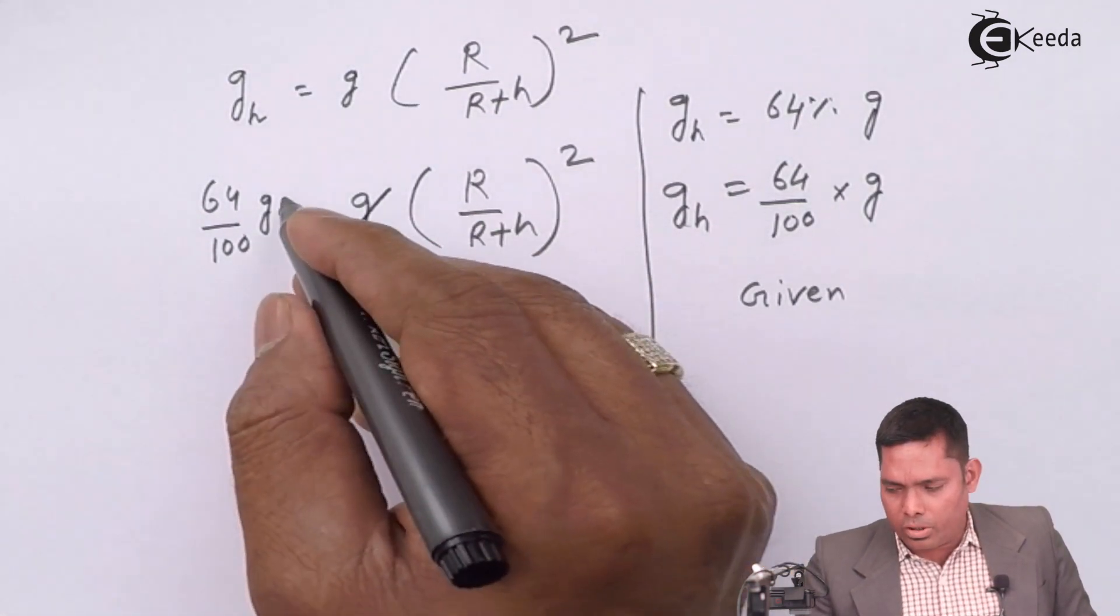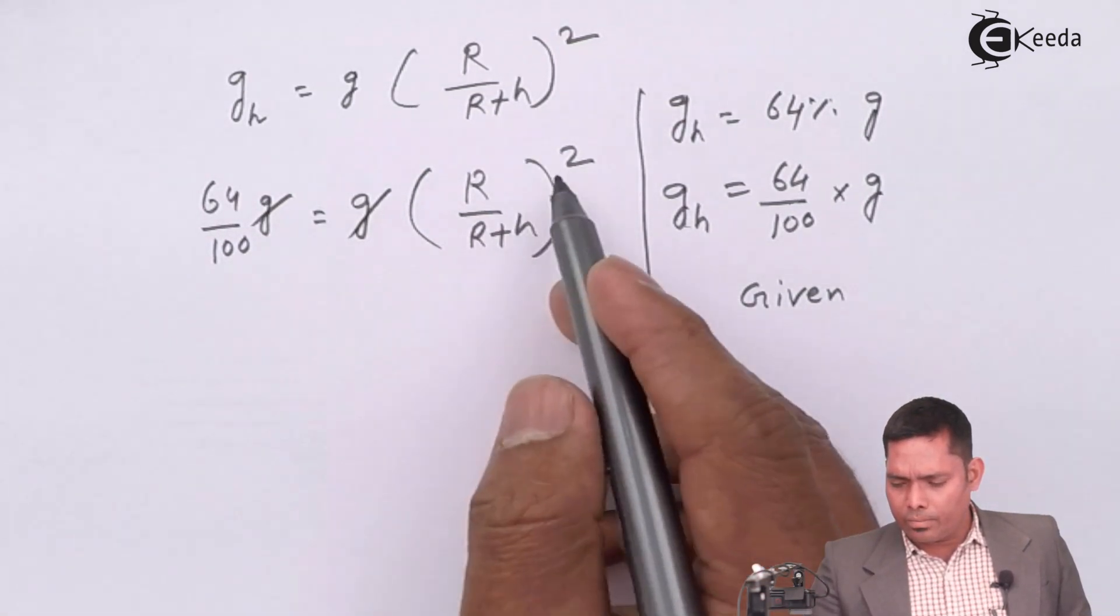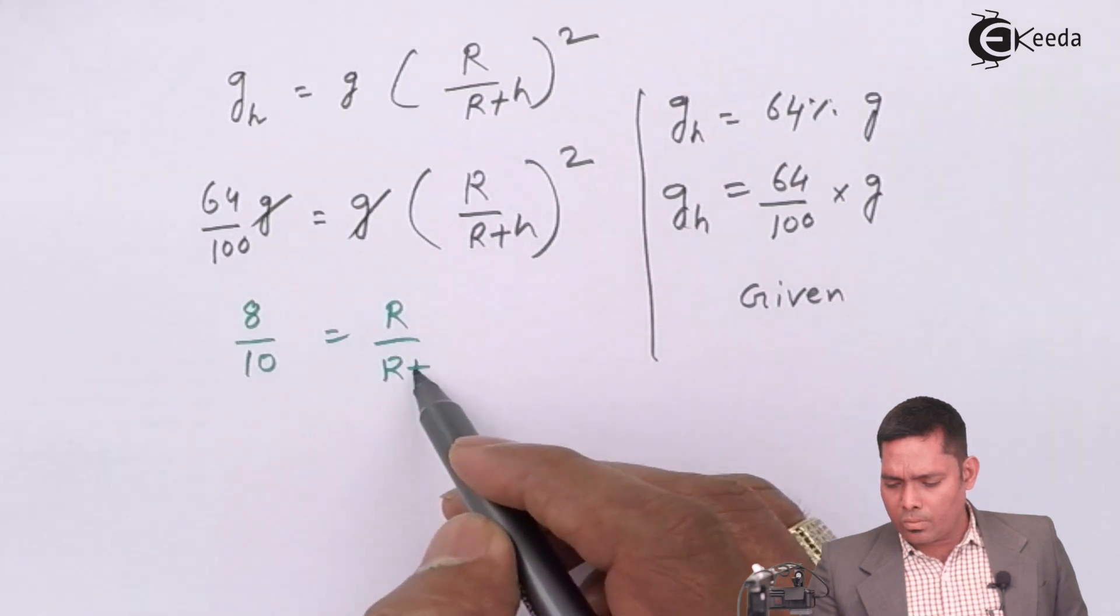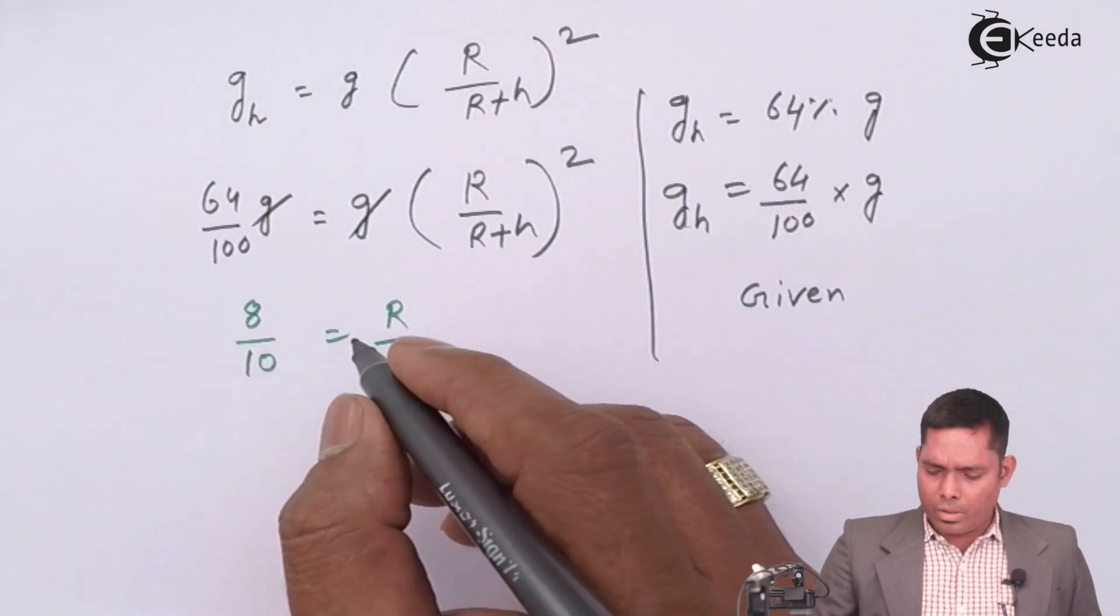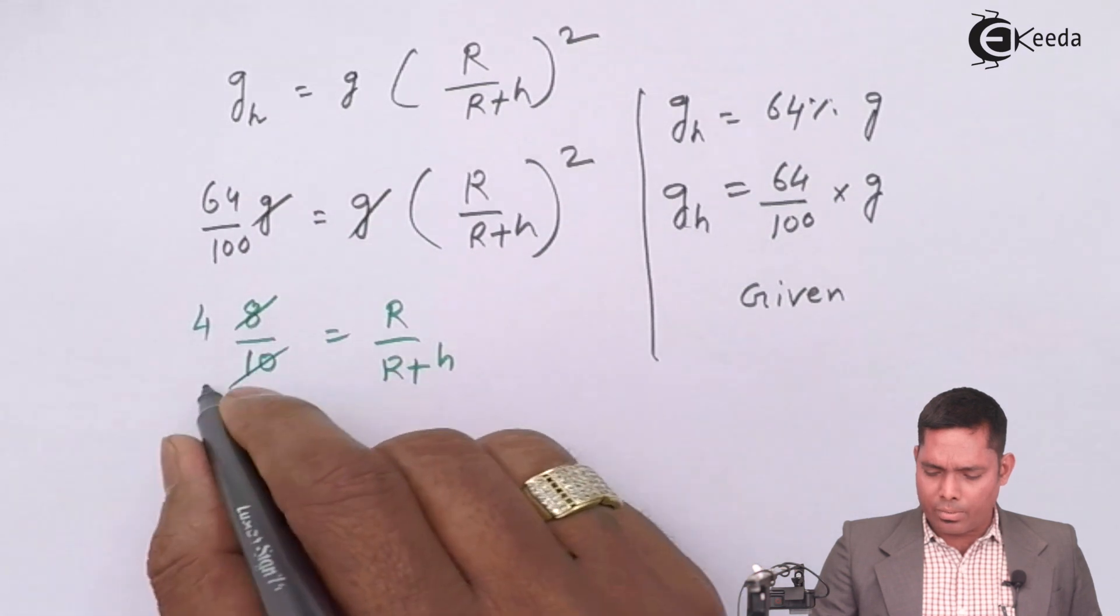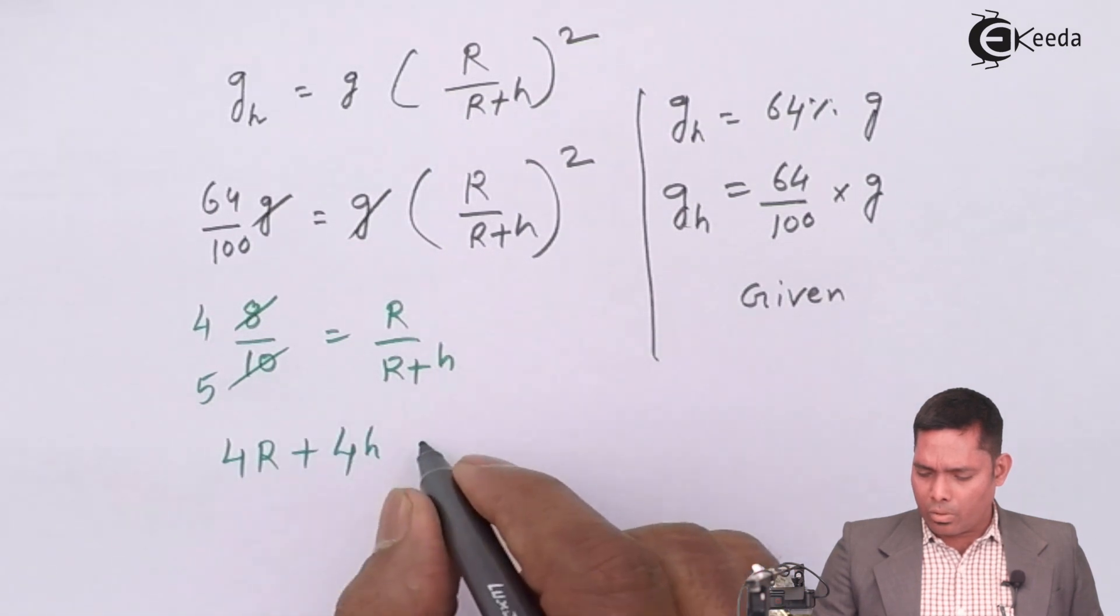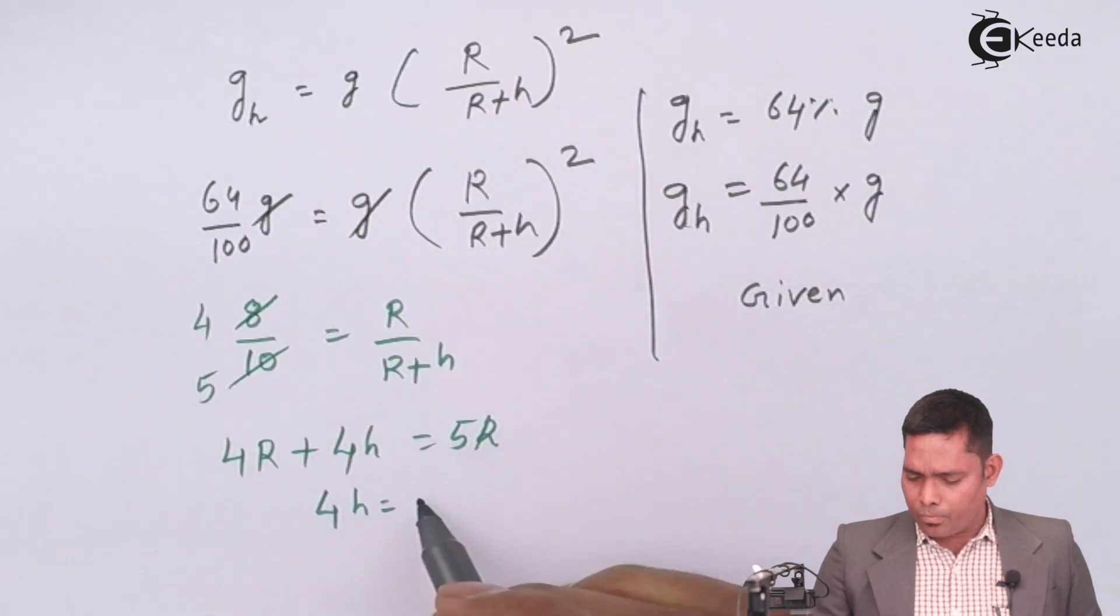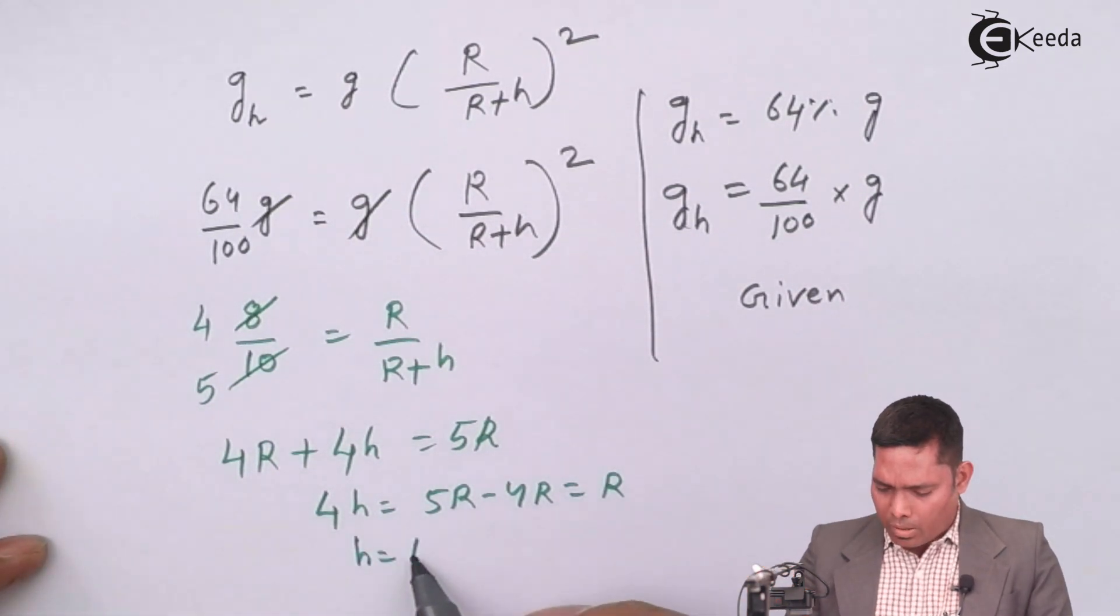So from here, I will cancel out g, and then 64 by 100. I will just take the square root, then it will become 8 and 10. This will become R and this will become R plus h. I will cross multiply. This I can write as 4, this as 5. If I cross multiply, I will get 4R plus 4h equals to 5 times R. So 4h will become 5R minus 4R which is R, or h equals to R by 4.